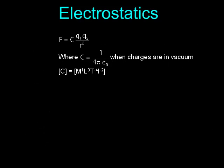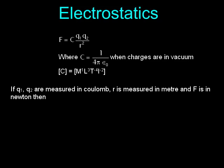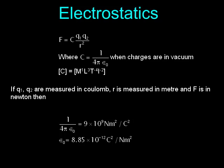Coulomb's Law formula: F = C × (Q1 × Q2) / R², where C = 1 / (4πε₀). When charges are in vacuum, the dimensions of C are [M¹L³T⁻⁴I⁻²]. If q1 and q2 are measured in coulomb, r in meter and F in newton, then 1/(4πε₀) = 9 × 10⁹ Nm²/C².